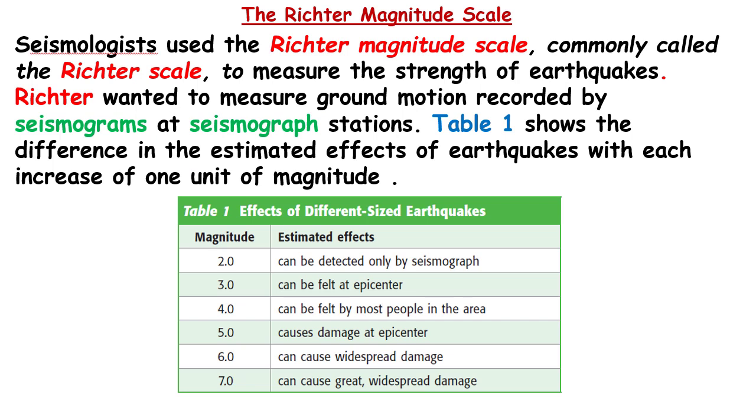Students, here is the Richter magnitude scale. Seismologists use the Richter scale, commonly called the Richter scale, to measure the strength of an earthquake. The Richter scale measures ground motion recorded by seismograms at the seismographic station. Table one shows the difference in the estimated effects of earthquakes with each increase of one unit of magnitude.